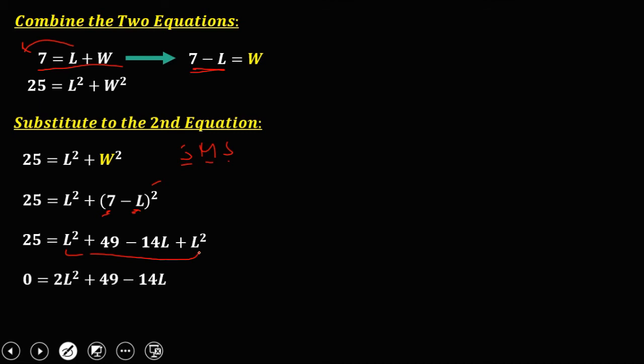Then combine this L squared and L squared. That's 2L squared plus 49 minus 14L. Then transpose this 25 to the right, that becomes negative 25. Then arrange this equation. So start with 2L squared minus 14L. And this positive 49 and negative 25 is positive 24. Then that's equal to 0.